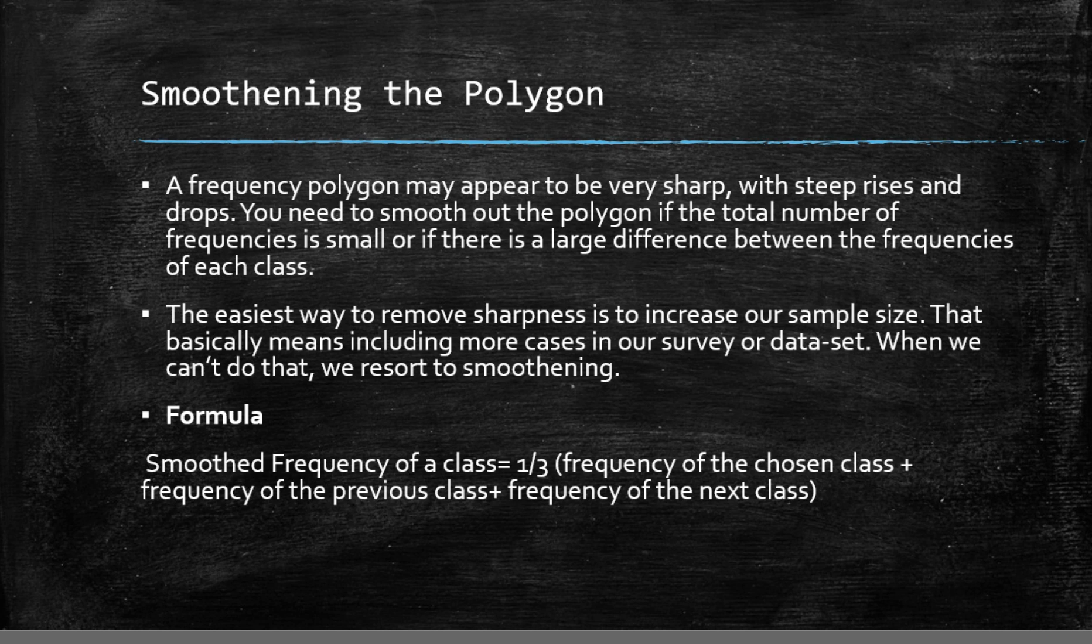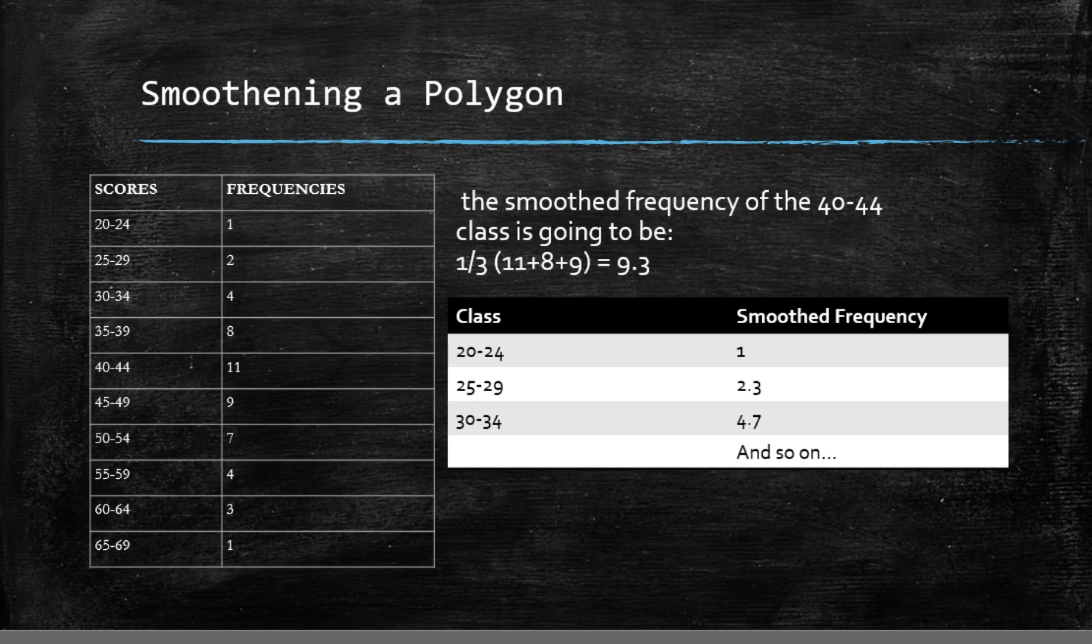The best way to smoothen a polygon is to simply include more cases in your survey. However, if you cannot do that then apply the formula given on the screen to acquire the smooth frequency of each class. You can see that if we apply that formula to our example table we receive smooth frequencies for all our classes easily.